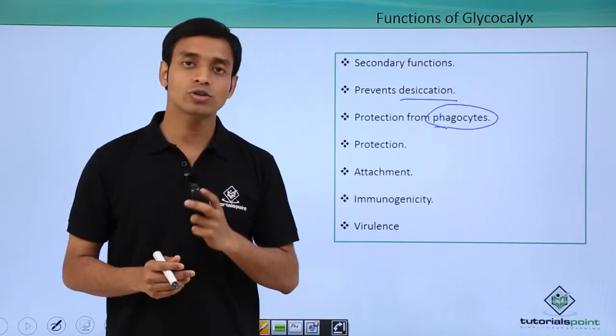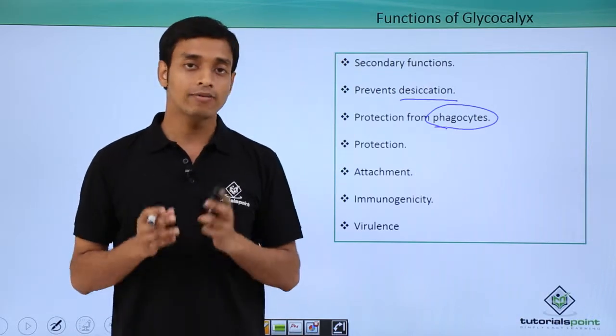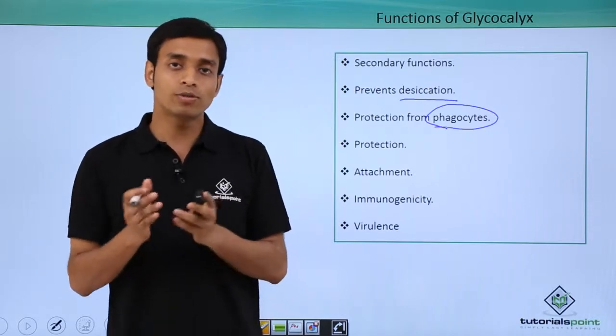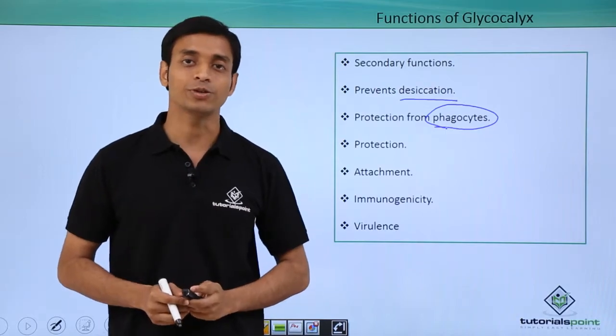So in this video, we have talked about the outermost layer of a bacterial cell which is known as glycocalyx, and we have also discussed some of the important or secondary functions which it provides to a bacterial cell. I hope you have understood and liked this video. Thank you.